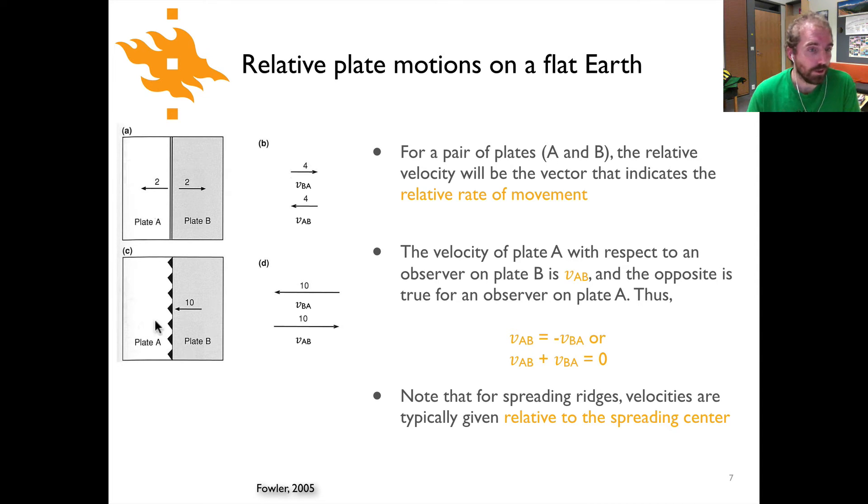Beneath our spreading ridge we have now a depiction of two more plates, again plate A and plate B. In this case, plate B is being subducted beneath plate A with a velocity of 10. In contrast to what we saw with the spreading ridge, in this case we simply have relative velocities that are equal to whatever the magnitude is listed, so VBA and VAB have opposite orientations but will have a magnitude of 10 as shown in the figure.